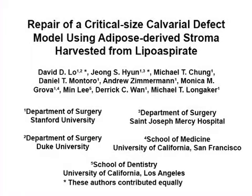The overall goal of this procedure is to harvest multipotent stromal cells from adipose tissue for the purpose of osteogenic differentiation using an in vivo calvarial defect model in a mouse.